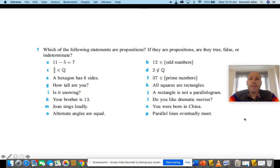Which of the following statements are propositions? If they are propositions, are they true, false, or indeterminate? Well, let's look at A. 11 minus 5 equals 7. That is a proposition, but it's false.